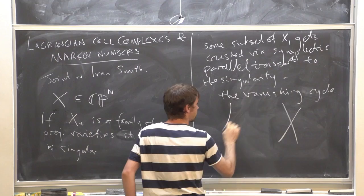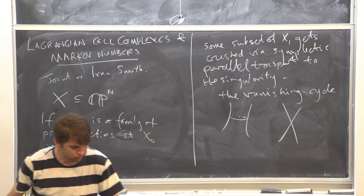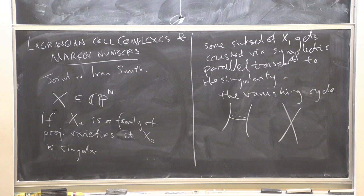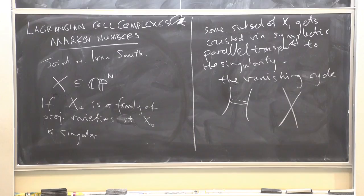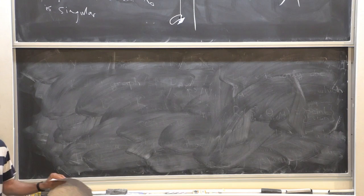We're hopefully familiar with the example where you take a nodal degeneration, and when you smooth it out you get a Lagrangian sphere — this is the vanishing cycle in that movie. So I want to focus on some singularities that are not just nodes today. First I'm going to tell you what the vanishing cycle looks like, then what the singularity is and why it's important, and then what we can actually prove about them.